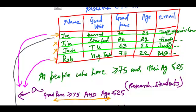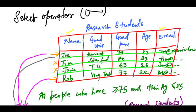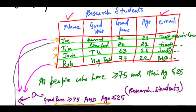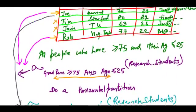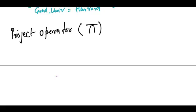By vertical partition I mean if suppose I am interested only in the name and email of all the persons in this table. So what I will say is project name and email from Research Students.